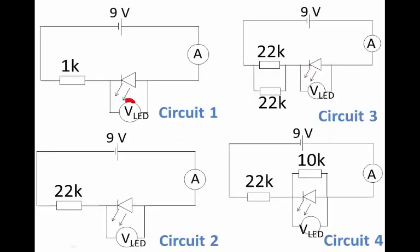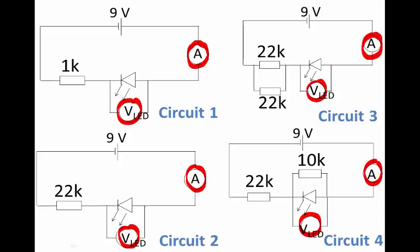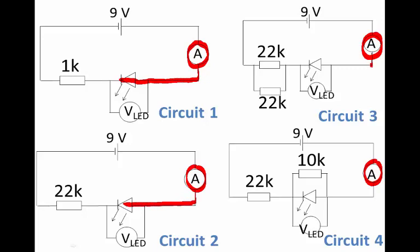In all these circuits, we have a voltmeter across each LED to get the voltage reading, and we also have an ammeter in the main part of each circuit to get a current strength reading. In circuits 1, 2, and 3, that current strength reading is also the current strength through the LED because it's part of the main circuit. But in circuit 4, we have to be careful because what the ammeter measures is not what goes through the LED — at this branch, the current from the main part of the circuit splits.